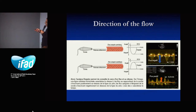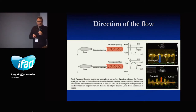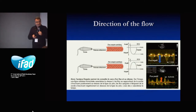On the spectral Doppler you have the velocities displayed on a scale. For example, the aortic blood flow is one meter per second, and you see that it is a negative flow because the flow is moving away from the probe.